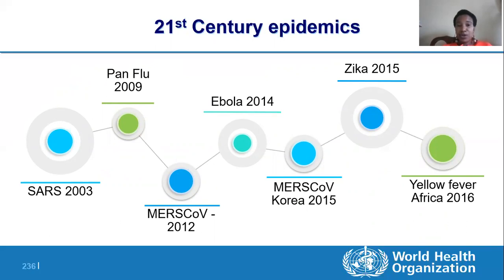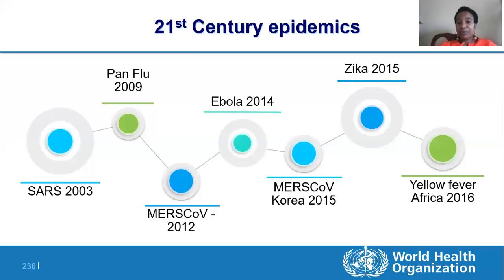COVID-19, as we all know, is not the first epidemic the world has encountered. We have had SARS in 2003, the swine flu of 2009, MERS-CoV of 2012, Ebola of 2014, and the Zika syndrome of 2015. COVID-19 is part and parcel of 21st century epidemics. Just like any other epidemic, we are going to communicate on how to prevent it, protect against it, and at the end of the day, overcome it.